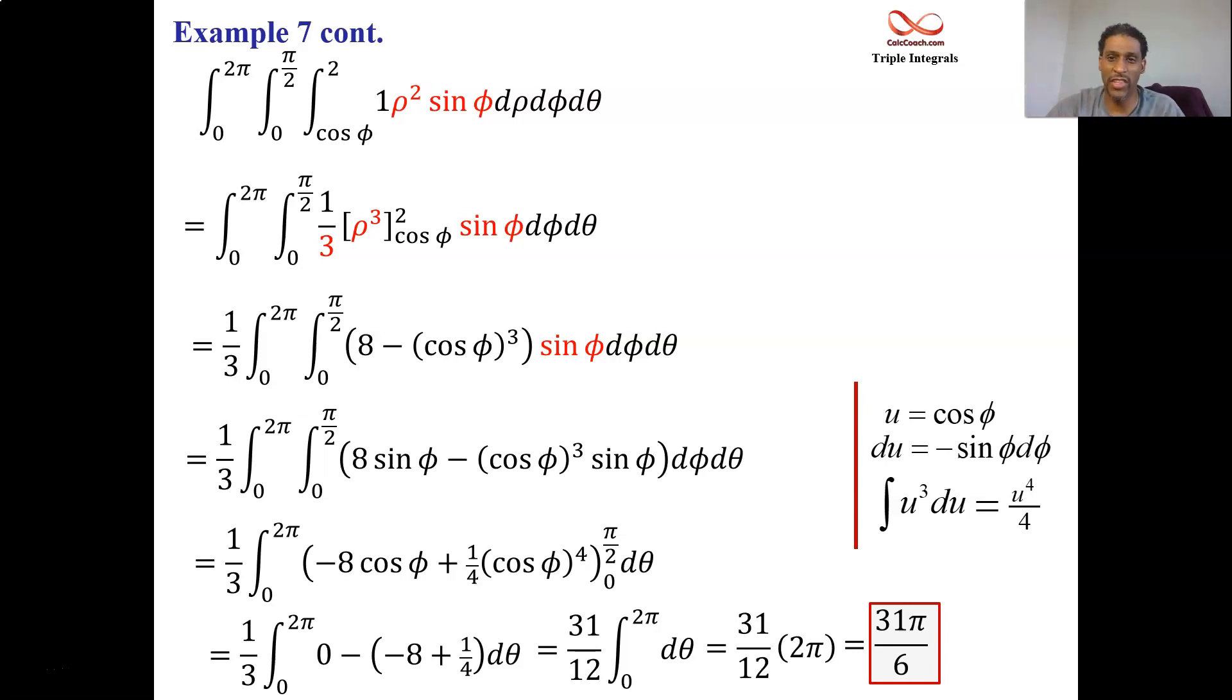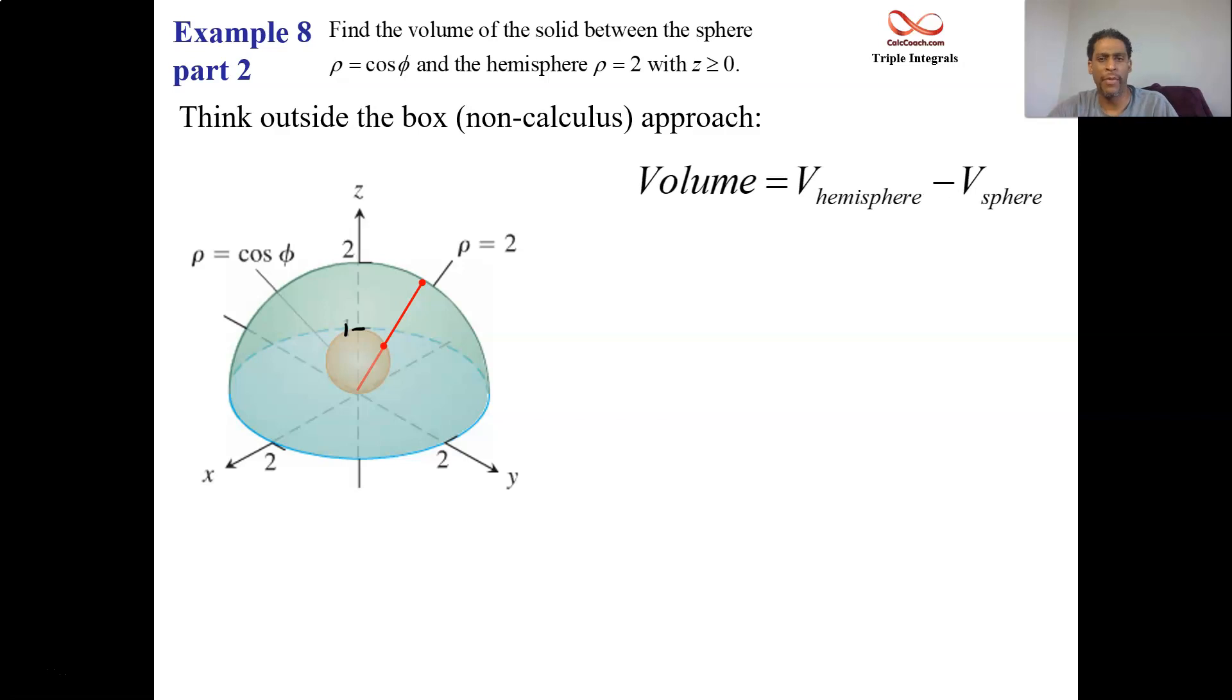And since we're trying to find volume, I want you to know that we could have done this outside the box. Thinking like, of course, this is the answer. Triple integrals, that's okay. If you figure you can do something outside the box and think about it that way, that's fine. I won't accept it for the full answer. I want you to use the calculus. You can use this as like knowing what the answer is. But yeah, I have a hemisphere dome. I know how to find a volume back in geometry class. You figured that out. Volume of a sphere and volume of a hemisphere. You can subtract. That'll give you the volume of the in between. So the hemisphere has a radius of 2.